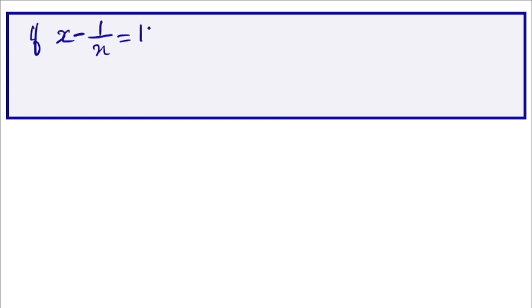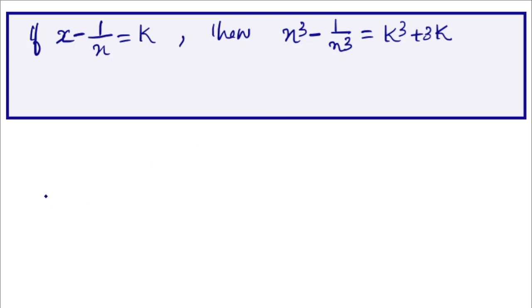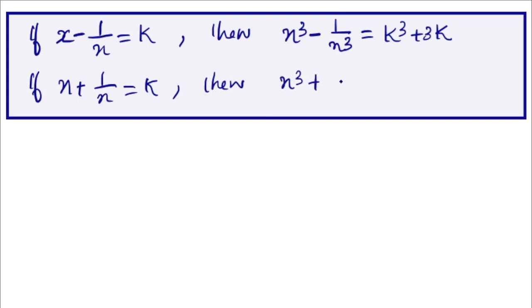I will explain the short trick. If x minus 1 by x is k, then x cubed minus 1 by x cubed is k cubed plus 3k. If x plus 1 by x is k, then x cubed plus 1 by x cubed is k cubed minus 3k.